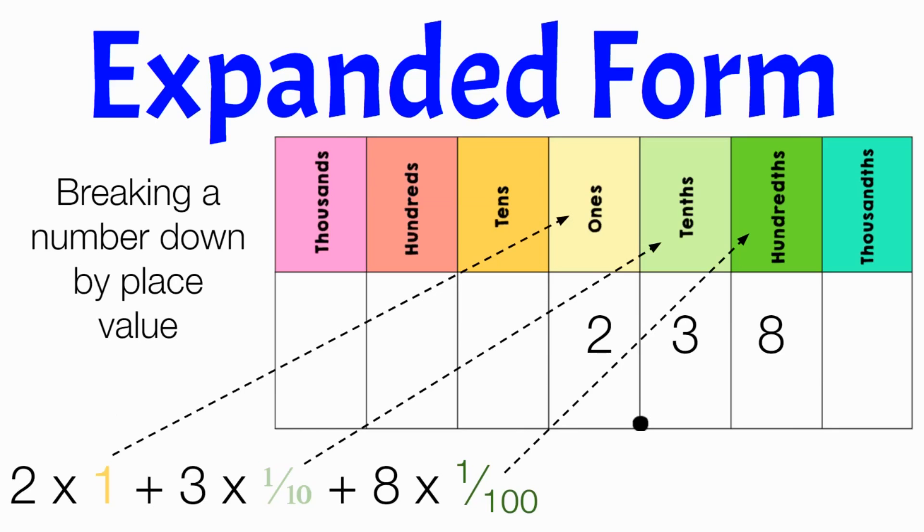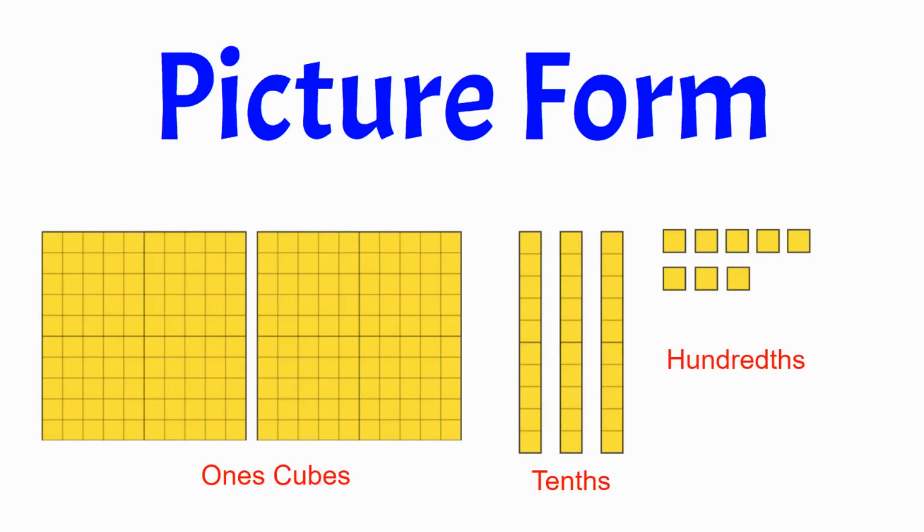And in expanded form, the way that we express the decimals is that we just write them as fractions. And then another form, which you're not going to be tested on in this video, is just picture form. So for example, just modeling with the base 10 blocks, or even drawing a quick picture using base 10 blocks. And this is also showing two and thirty-eight hundredths.